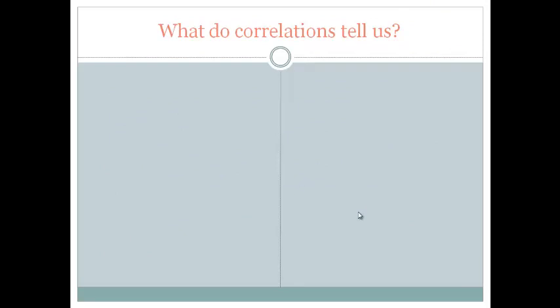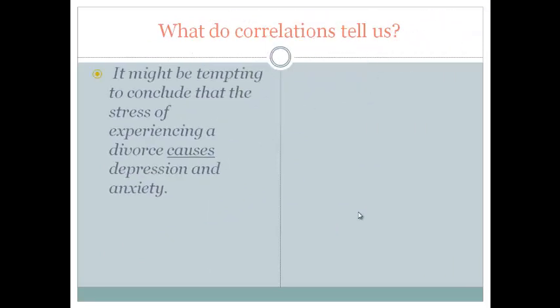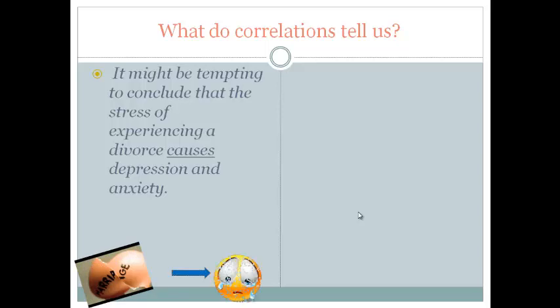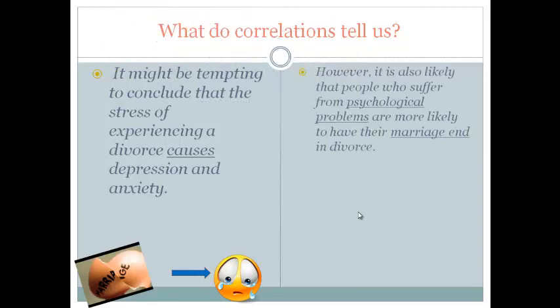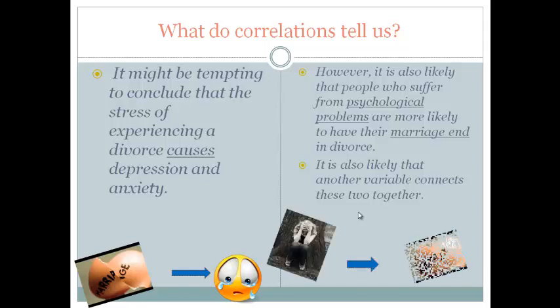What do correlations tell us? Well, it might be tempting to conclude in the previous example that divorce causes depression and anxiety. It makes sense, right? But that's not necessarily true. Does a broken marriage cause people to be more depressed? Because it might be equally likely that if people are depressed or have other psychological problems, they are more likely to have marriages that end in divorce. It's also just as likely that there's some other hidden variable that we don't know about that's linking those two things together and causing them to have an effect on each other. We'll talk about that third hidden variable a little bit later.